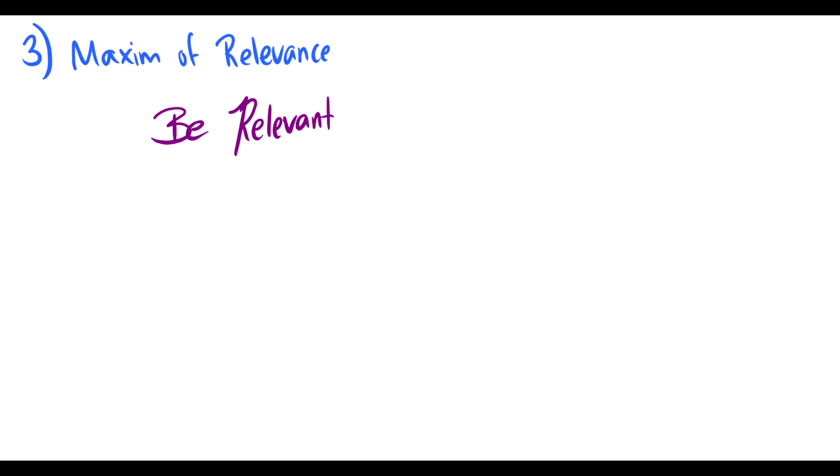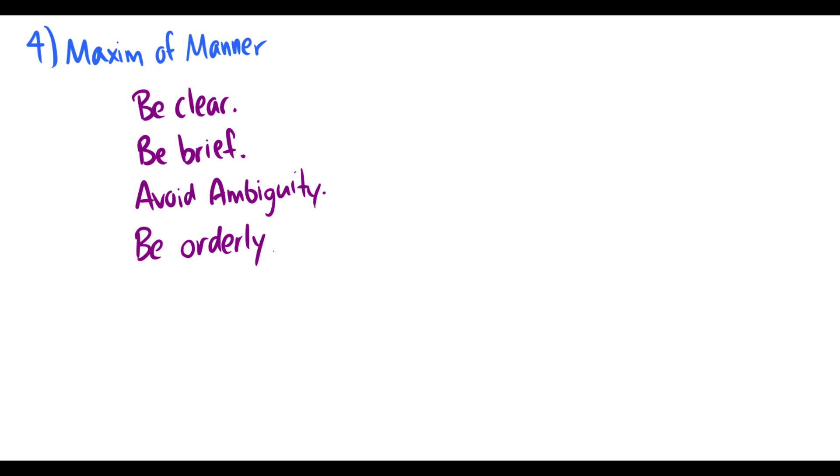So this leads us to our fourth maxim, which is the maxim of manner. And this is a very interesting one. Be clear, be brief, avoid ambiguity, and be orderly. So if I say, how does Descartes prove the existence of God? And you hand me an essay that has an argument that is all over the place, repeats lines, and typically looks like something a grade seven would write, then you're probably violating the maxim of manner because you're not being clear, you're not being orderly, and you're kind of going all over the place.